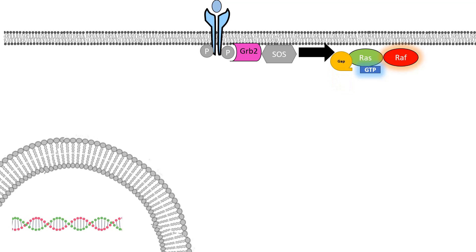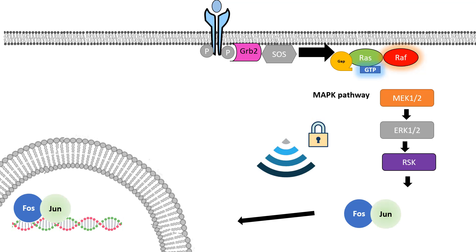Because in a mutated RAS, it is always bound to GTP. Even if the GAP protein is able to bind to the RAS-GTP, it cannot hydrolyze the GTP. And as a consequence, RAS is always active, constitutively active. And the downstream signaling pathway is always on, regardless of how much signal is present in the environment or how much growth factor is present in the environment. As a consequence, there is a huge amount of output in the MAP kinase signaling pathway.